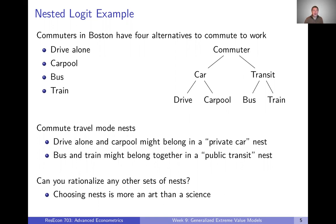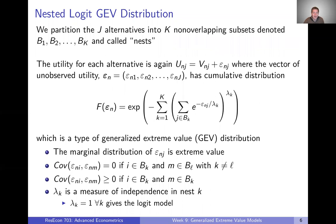Of course you could probably rationalize a different set of nests for the same problem — see if you can come up with an alternative nesting structure for a commuter making this choice. This shows that choosing nests is still more of an art than a science. We still have to impose some structure on the selection of nests, and there is some researcher decision making that goes into that process.